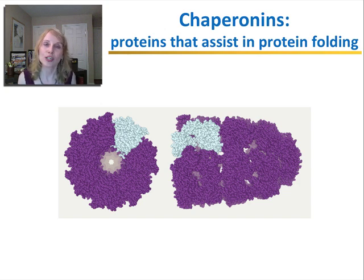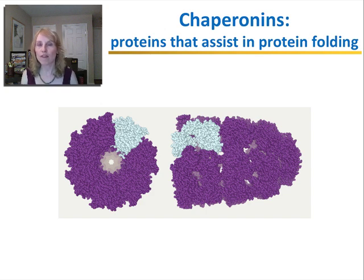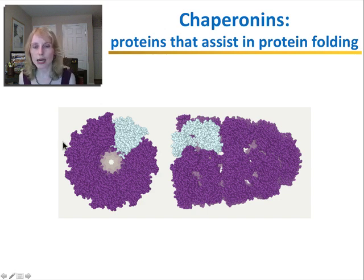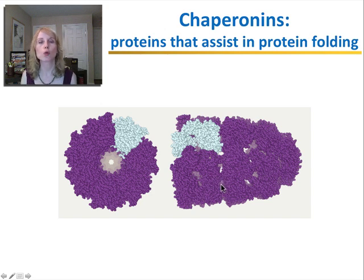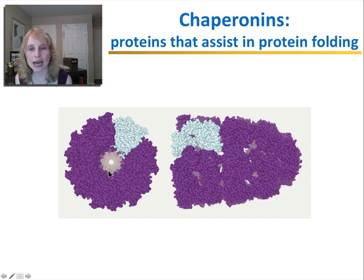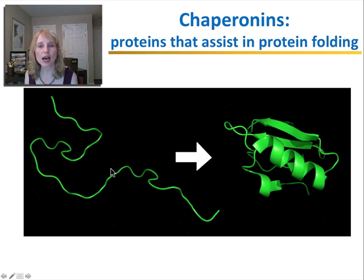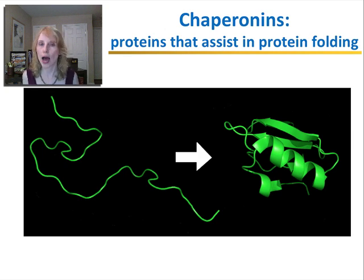Chaperonins are structures that all living cells have to help them fold proteins. A chaperonin is a very large complex structure that is itself made up of proteins. When a polypeptide is being made and needs to be folded, it actually goes inside this chamber into a cavity that provides a nice environment for all of the amino acids to form the proper interactions between them, such as the hydrogen bonds, ionic bonds, and van der Waals interactions.